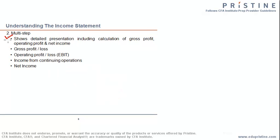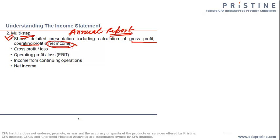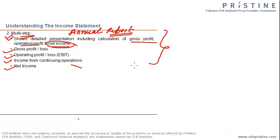The more popular format is the multi-step model, which is what most annual reports use. This format provides information about gross profit, operating profit, and net income — not just net income alone. It first deducts operating expenses such as COGS to arrive at gross profit, then deducts other operating expenditure to show operating profit, and finally arrives at net income after accounting for discontinued operations and extraordinary items.